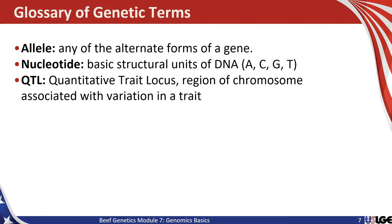More terms: an allele is any of the alternate forms of a gene. A nucleotide is the basic structural unit of DNA. The four alphabet letters for nucleotides include A, C, G, and T, and they become the coding language for the architecture of the genome and the DNA sequence. A QTL, or quantitative trait locus, is a region of a chromosome associated with variation in a trait.